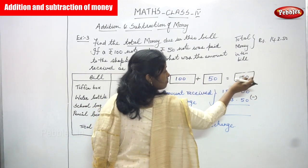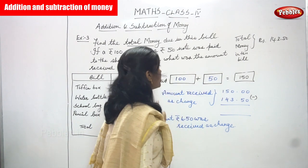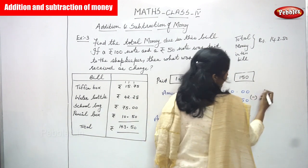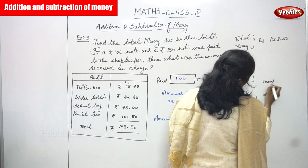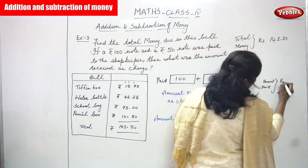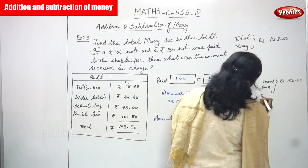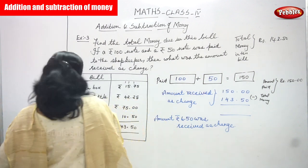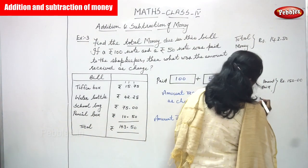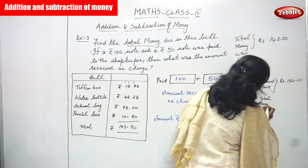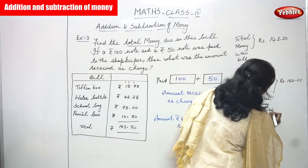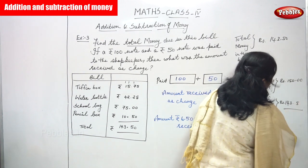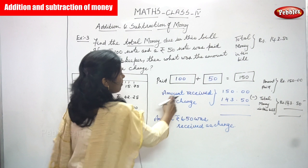100 plus 50 — he has paid already 150 rupees. The bill amount, that is the total money in this bill, is rupees 143.50. Now for the amount received as a change, you have to write: Amount paid is rupees 150, and total money in this bill is rupees 143.50. You have to subtract to find the change.